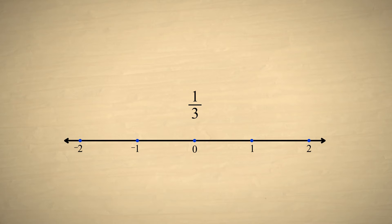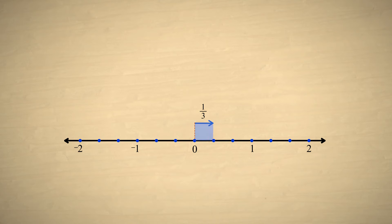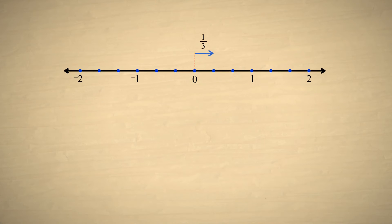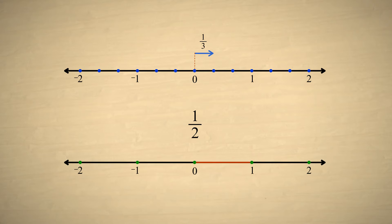Since the fraction one-third has a denominator of three, each unit length on the number line is divided into three equal divisions, and the fraction one-third is represented by one of these divisions. On the other hand, the fraction one-half has a denominator of two, so each unit length on the number line is divided into two equal divisions, and the fraction one-half is represented by one of these divisions.